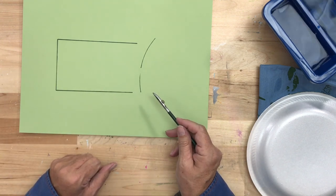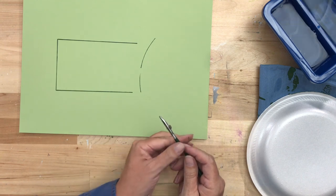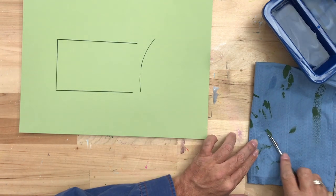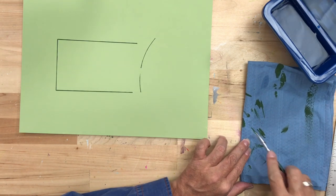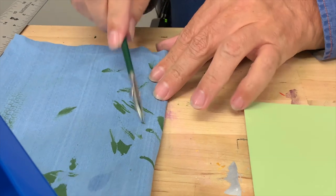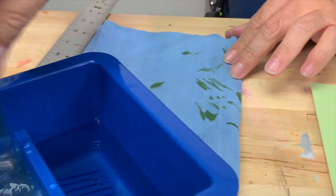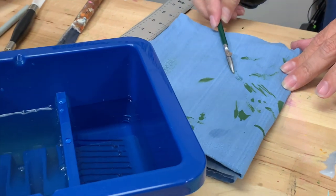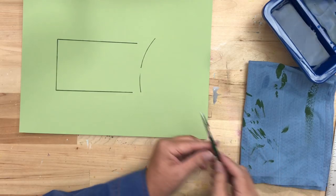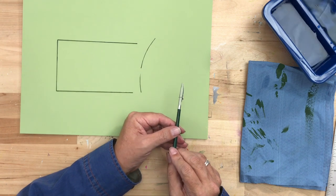To clean the ruling pin it's very easy. Simply take the excess paint out of the pen, might want to open it up a little bit to make that easier, and then simply rinse it in water and blot it to dry. That's all there is to cleaning a ruling pin.